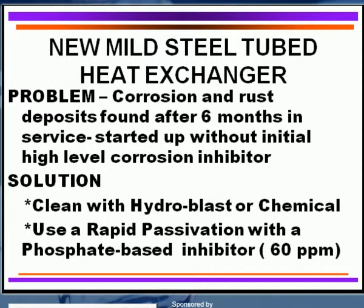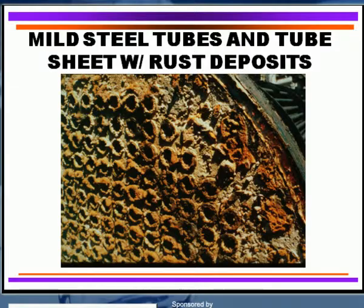So the key here for new heat exchangers, particularly mild steel, is to clean with either hydroblast or chemical cleaning if needed. If it's very new, maybe just a surfactant to remove oils and greases from fabrication. Then use a high rapid passivation treatment — a high dosage level of phosphate, usually around 60 parts per million for the entire cooling water system — and carry that for about a week to establish good protection on the metal surfaces.